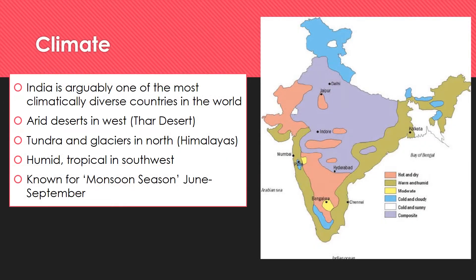Next up is climate, and it was really tricky to know what to cover because India is incredibly diverse. Depending on where you live or visit, you might experience very different types of weather and climate. As you can see from the map, all the different colours indicate different climate types. Some places are warmer or colder, some wetter or drier. It really differs from the UK where we have fairly similar weather and rarely see extremes. In India, because of its location in the world, you get a lot more extreme climates.